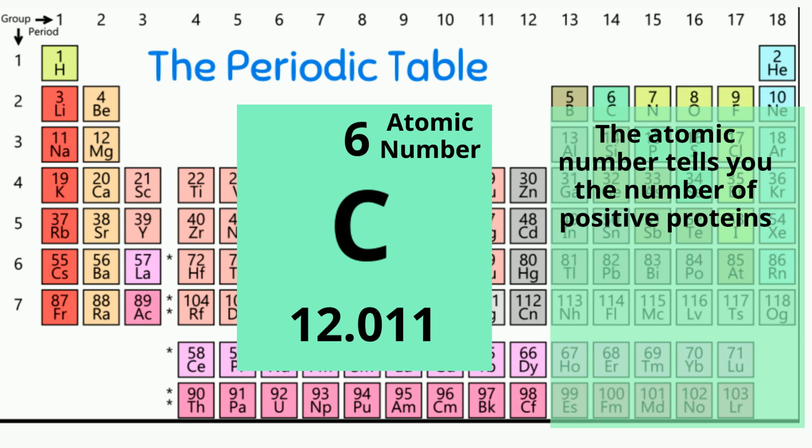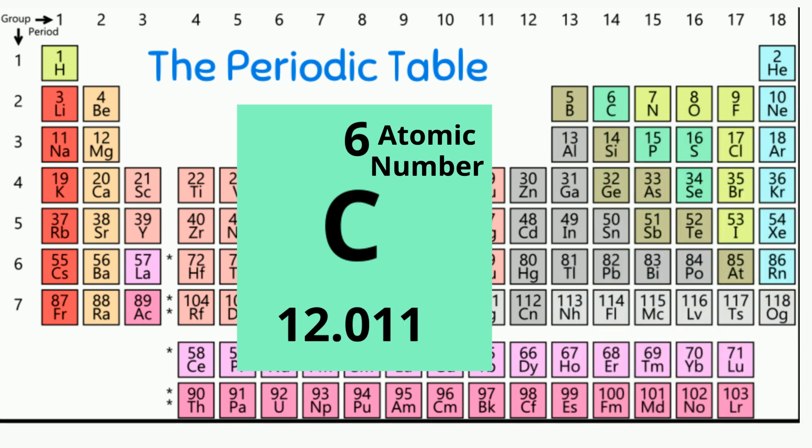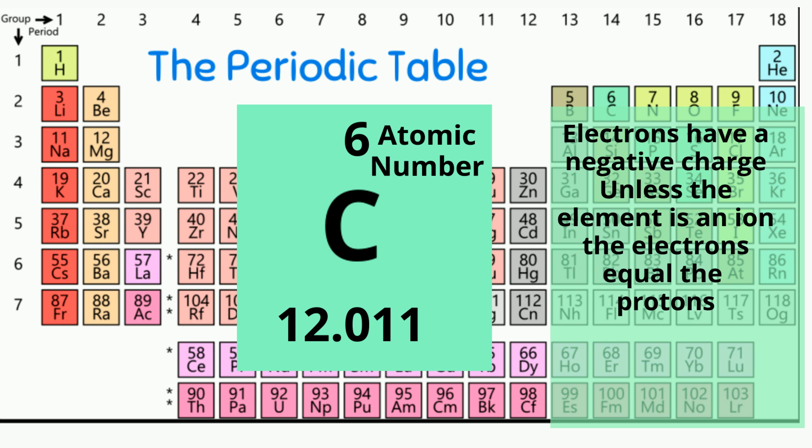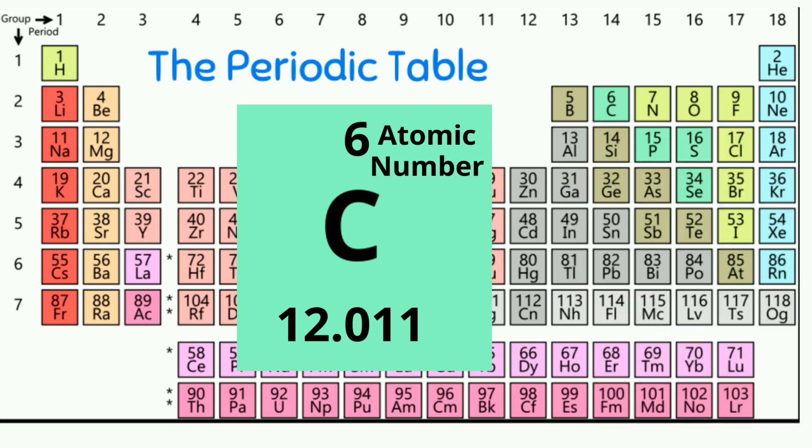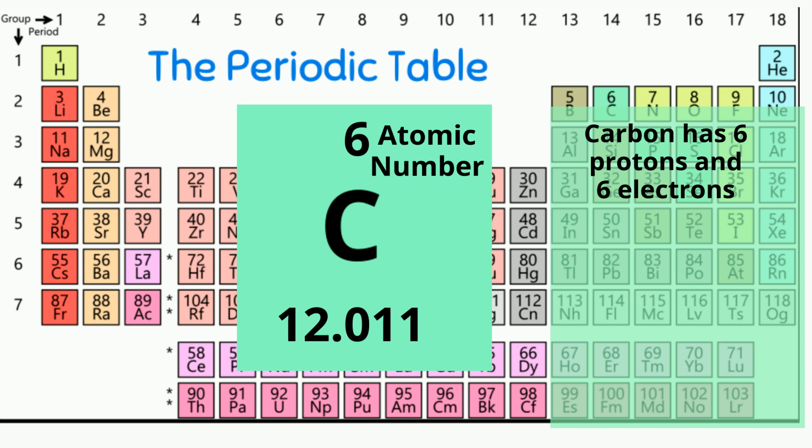Protons have a positive charge and give the element its properties and can never vary. Next let's figure out the number of electrons. Unless the element is an ion, which means it has a positive or negative charge, it will have the same number of protons and electrons. In this case, the number of electrons will be 6. 6 positives and 6 negatives equals a neutral charge.